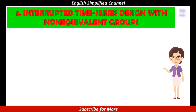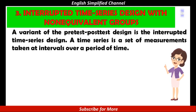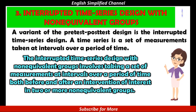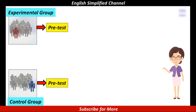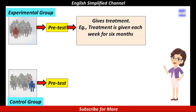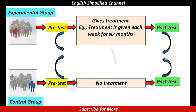Number 3. Interrupted time series design with non-equivalent groups. A variant of the pre-test post-test design is the interrupted time series design. A time series is a set of measurements taken at intervals over a period of time. The interrupted time series design with non-equivalent groups involves taking a set of measurements at intervals over a period of time, both before and after an intervention of interest in two or more non-equivalent groups. The first step is to give pre-test to the two groups. Then treatment is given by some periods of time — for example, treatment is given each week for six months to the experimental group, while the control group doesn't receive the treatment. After that, the two groups are post-tested, and finally the data is analyzed to draw the conclusion.